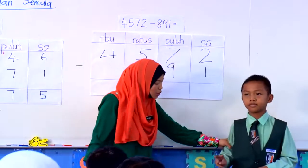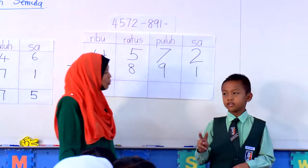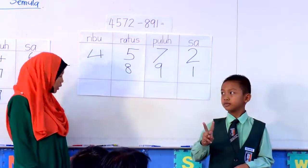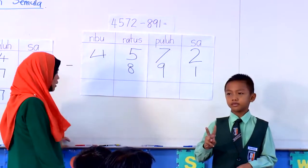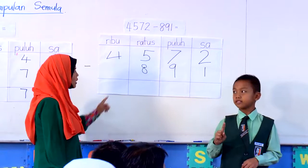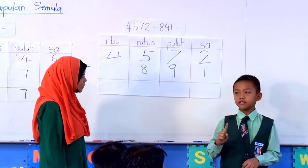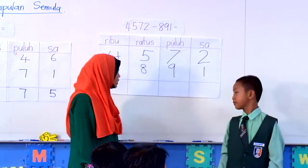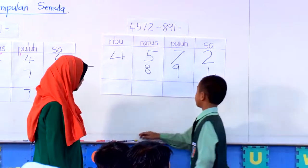Tolak 1, nak tolak berapa? Tutup berapa jari? 1. Tunjukkan pada kawan awak. 1. Tolak 1, maka berapa jawapan yang tinggal? 1. Sila tuliskan. 1.